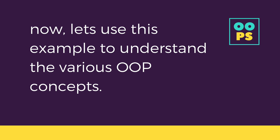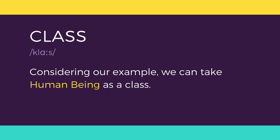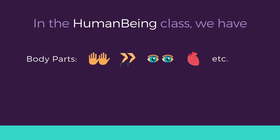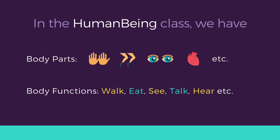I will try to explain all the OOP concepts using this example and later we will have the technical definition for all of these. First is class. In our example, we can take human being as a class. A class is a blueprint with core features and functions set — like a human being having body parts such as legs and hands, and performing actions like walking, breathing, and eating.